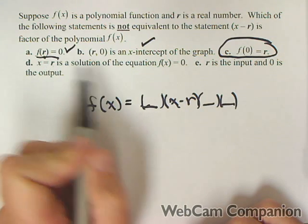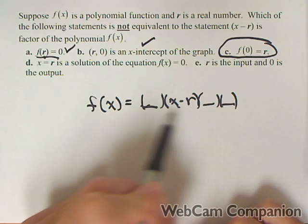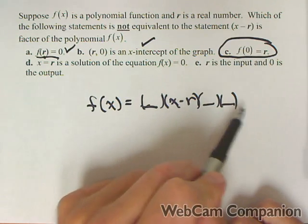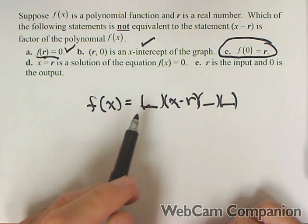r is the input and zero is the output. Again, a repeat of A and D because if we input r we get zero for this factor which means we get zero when we multiply it out.